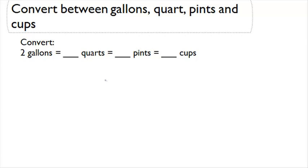We want to know what number of quarts would be equal to two gallons, what number of pints, and what number of cups. Now we need to know the formulas that would relate gallons to quarts, gallons to pints, and gallons to cups. So let's come up with them.